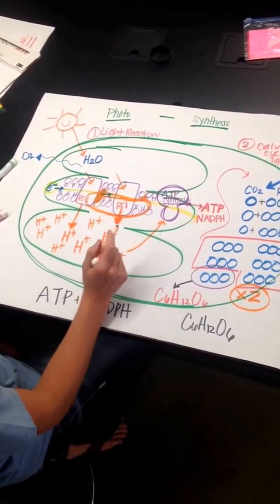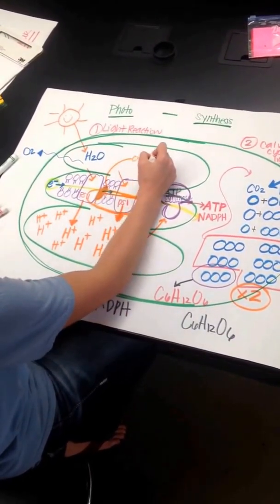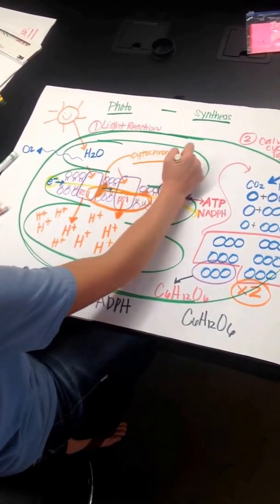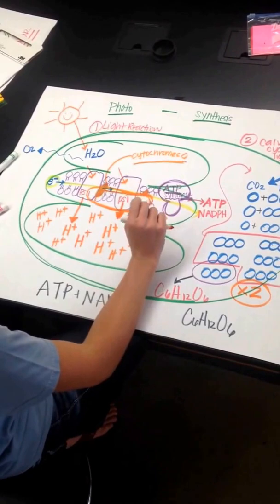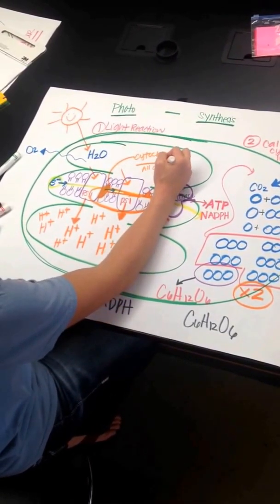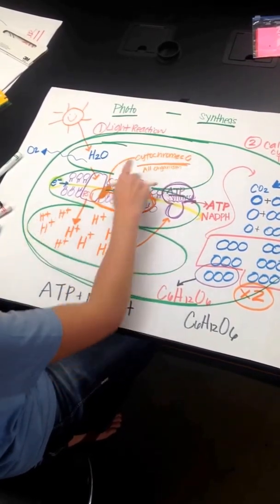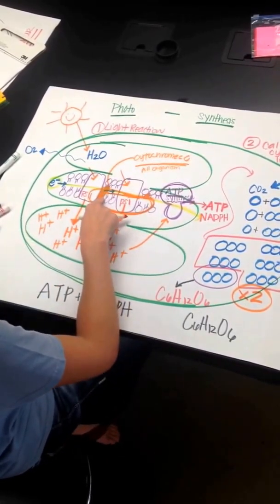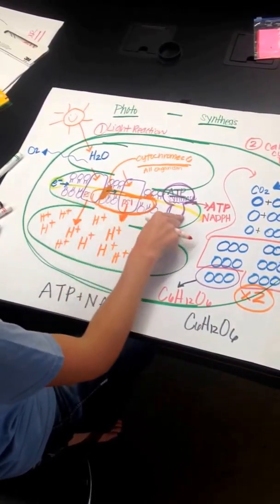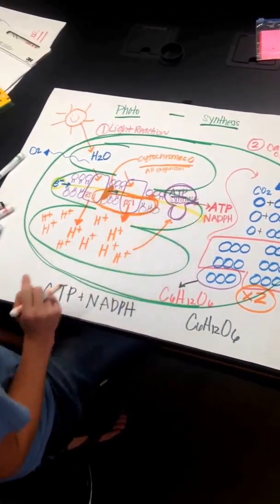These two systems are happening simultaneously. One thing you want to know, cytochrome C is a protein in the electron transport chain that helps to make energy, but all organisms have it, so it leads to the belief of common ancestor. Cytochrome C, all organisms have it. We have non-cyclic here, and cyclic. So non-cyclic makes ATP and NADPH, while cyclic just makes extra ATP.